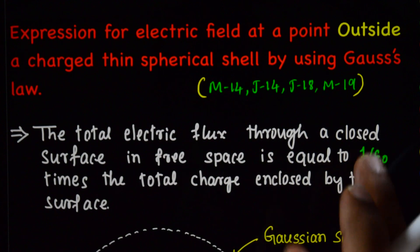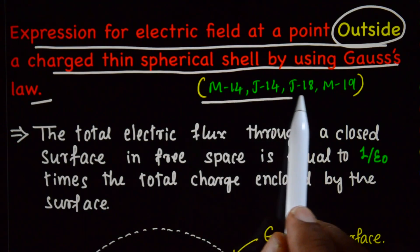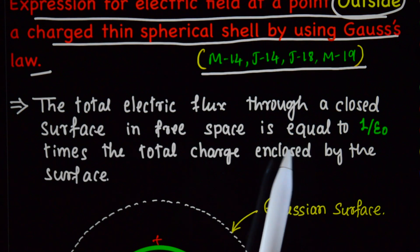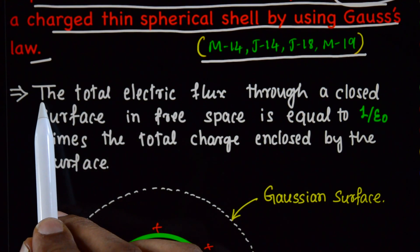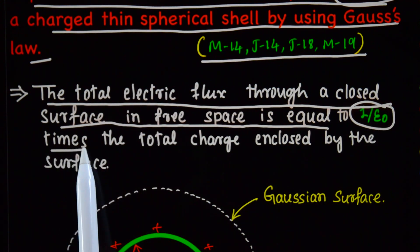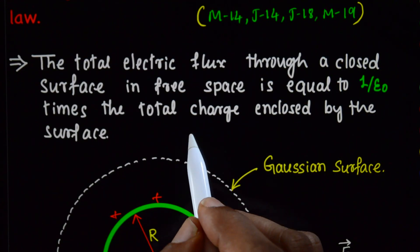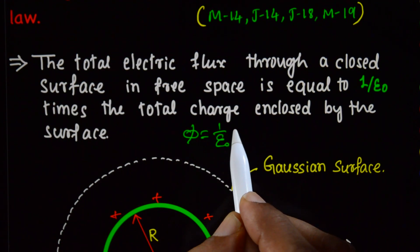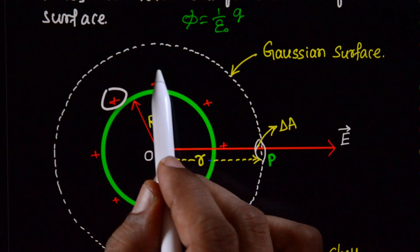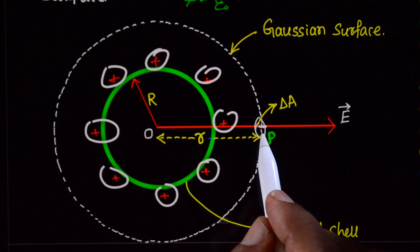Now, what we need to derive is the expression for electric field outside a charged thin spherical shell using Gauss's law. First, write the statement of Gauss's law: the total electric flux through a closed surface in free space is equal to 1 by epsilon naught times the total charge enclosed by the surface. Here, this is a spherical shell with charges uniformly distributed, and there is a point P outside the shell.